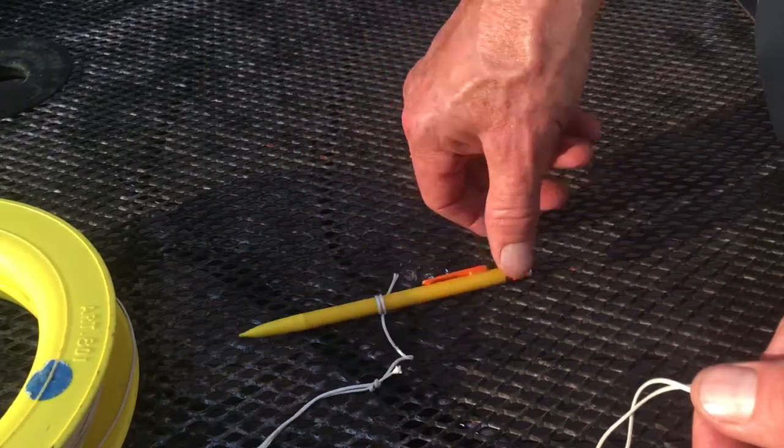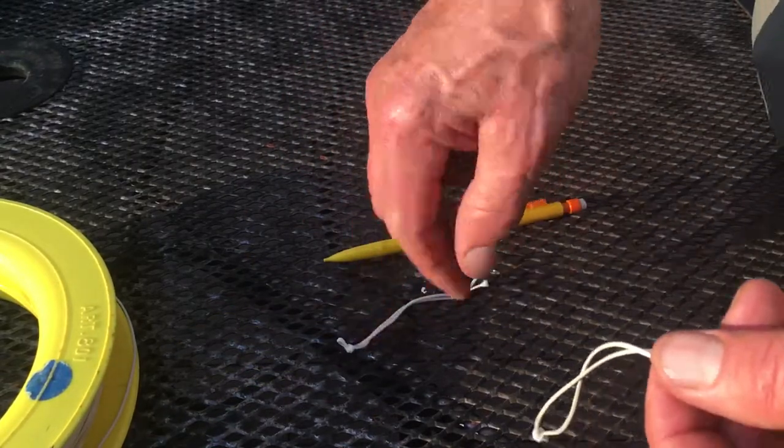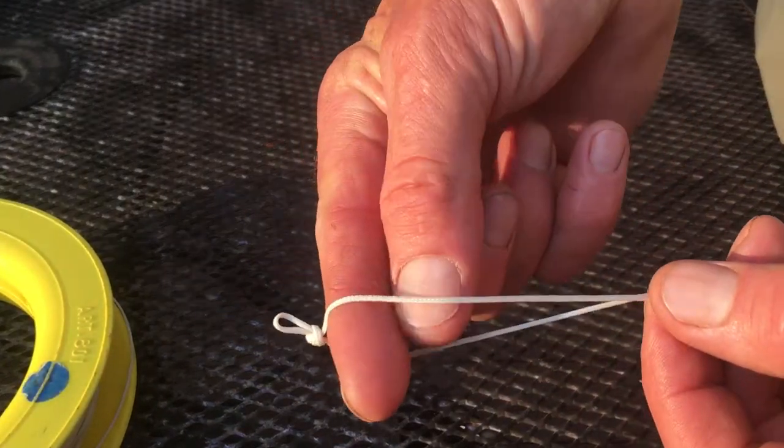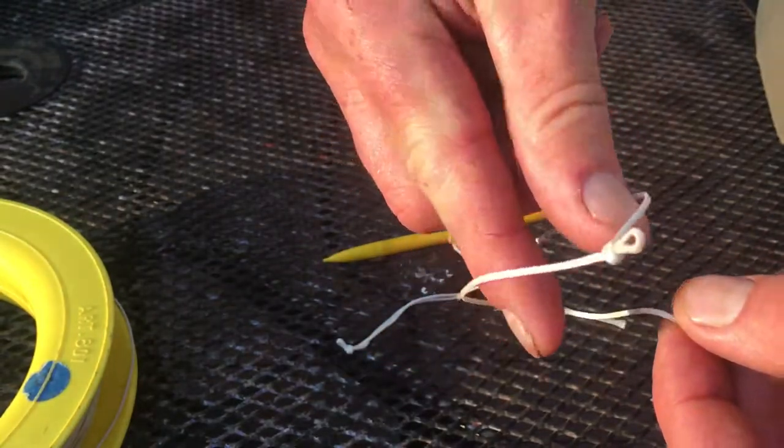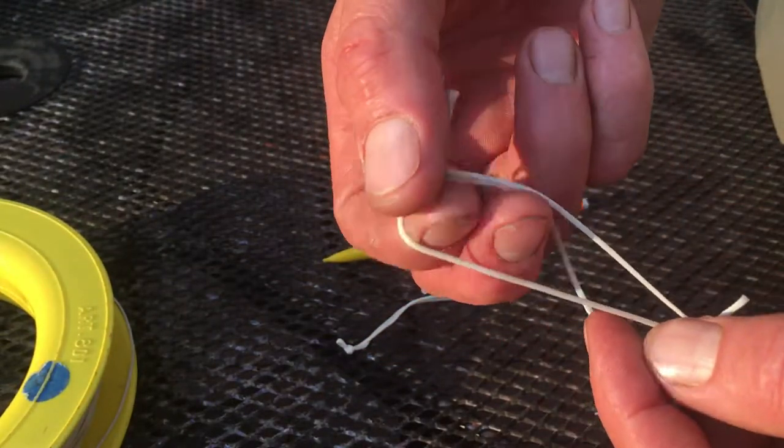So here's my kite. Here's my bridle knot down here. I'm going to take my string here, I'm going to reach over, I'm going to grab this string right here and pull it through.